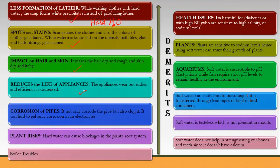Appliances wear out earlier and their efficiency decreases when hard water is used, because it creates scale on the appliances. With respect to pipes, hard water not only corrodes them but also clogs them. The limescale that forms inside a kettle — which you may have observed in daily life — creates wastage of energy during boiling. Hard water can also lead to galvanic corrosion.